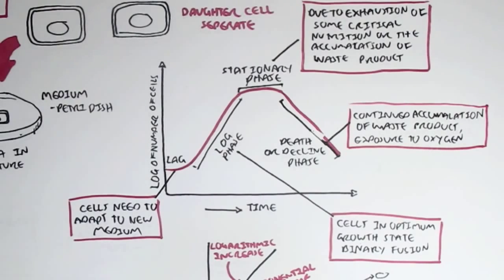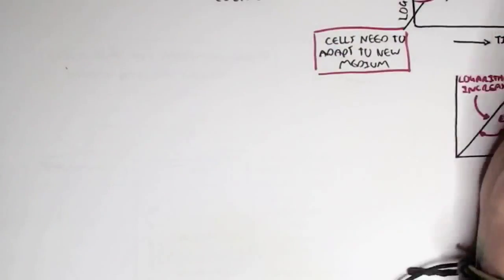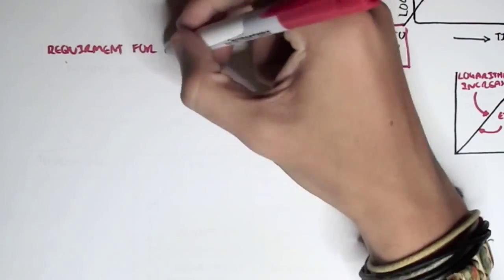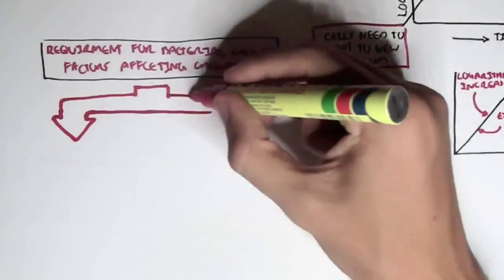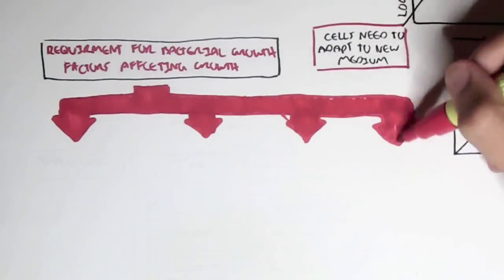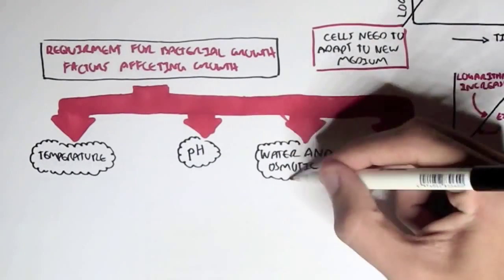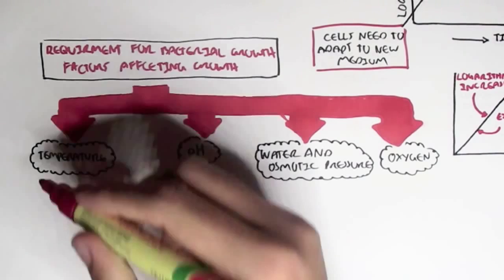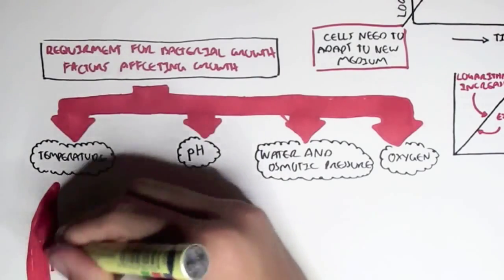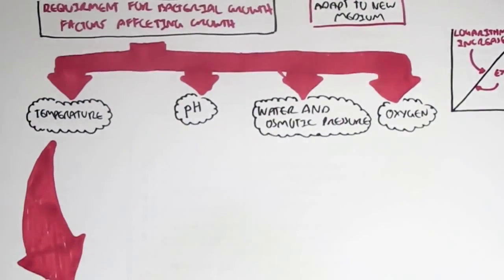But of course, the growth of the bacteria had to be under a good condition, under laboratory conditions. So, essentially, there are requirements for bacterial growth. And there are many factors which influence bacterial growth. The main factors affecting growth, that we will look at now, are temperature, pH, water, and osmotic pressure, and also oxygen. There is also nutritional requirements, which we will not look into in this video. Before we continue on with the requirements for bacterial growth, we have to understand that each bacteria is unique, in that they require different temperatures, different pH, different oxygen concentrations for growth.